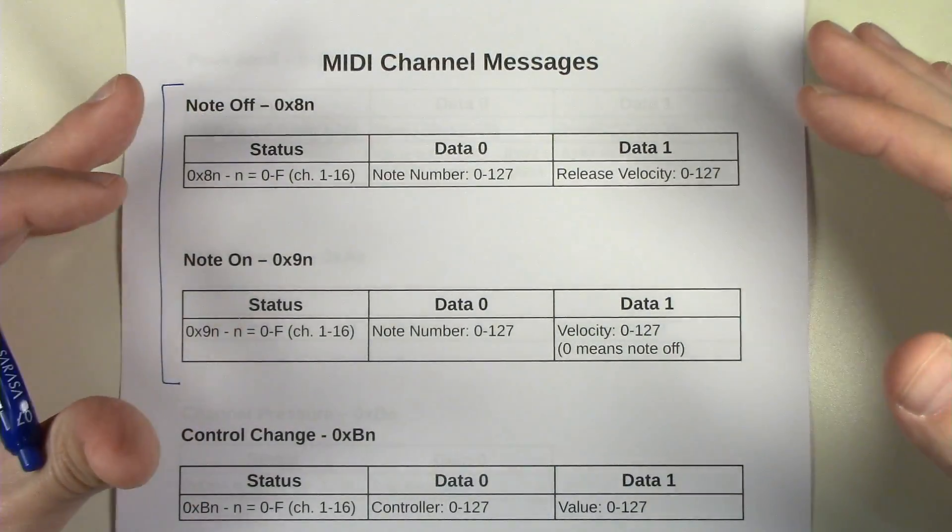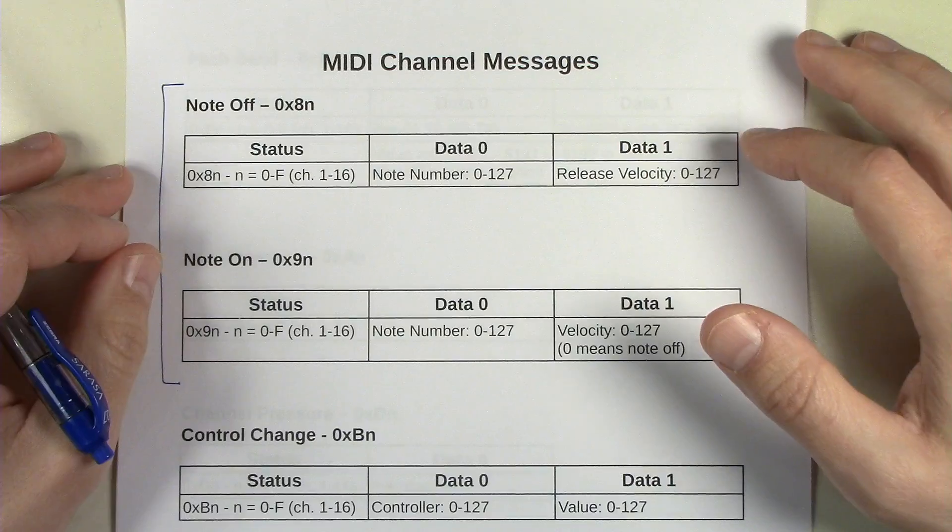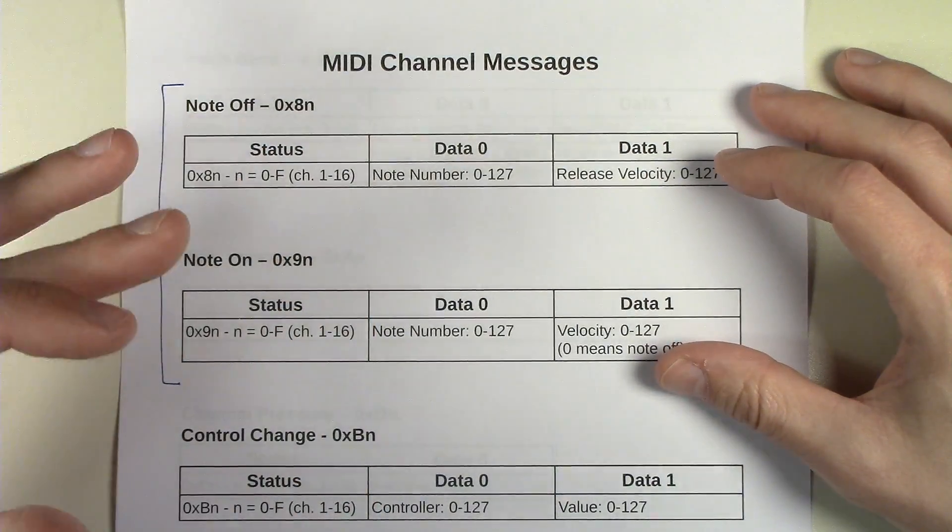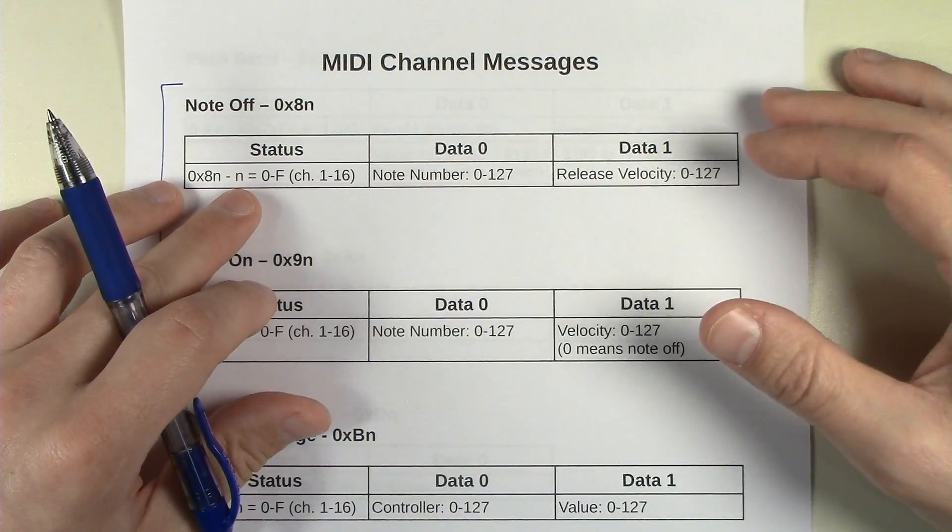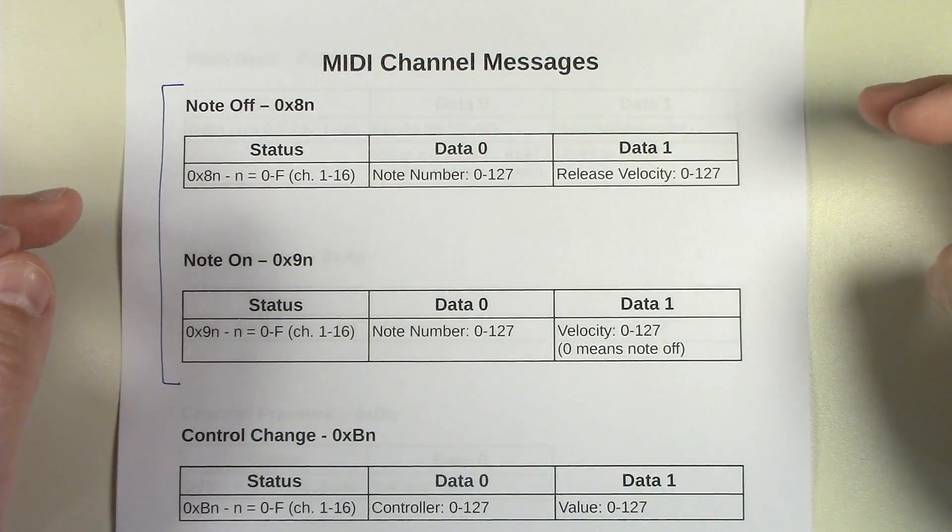You can obviously convert that into meaning other things, but when we talk about notes and when we say this note number equals this note on the actual instrument, that's really thought of in a sort of Western style.